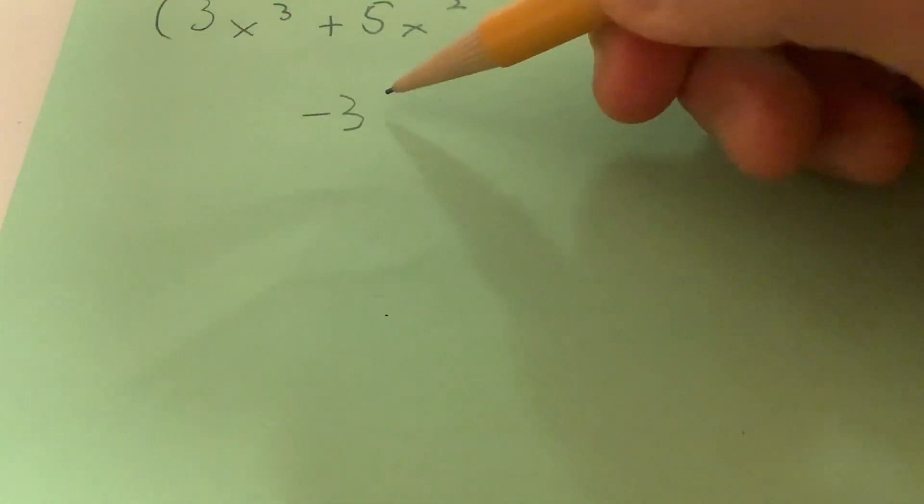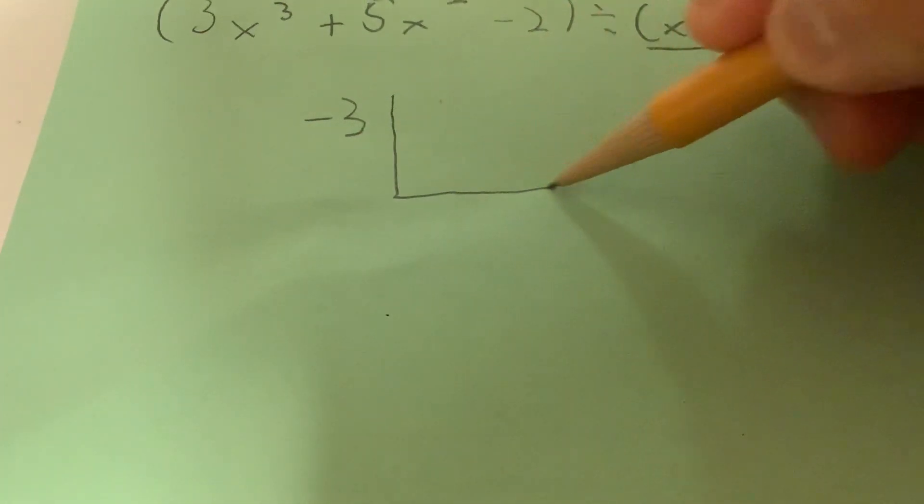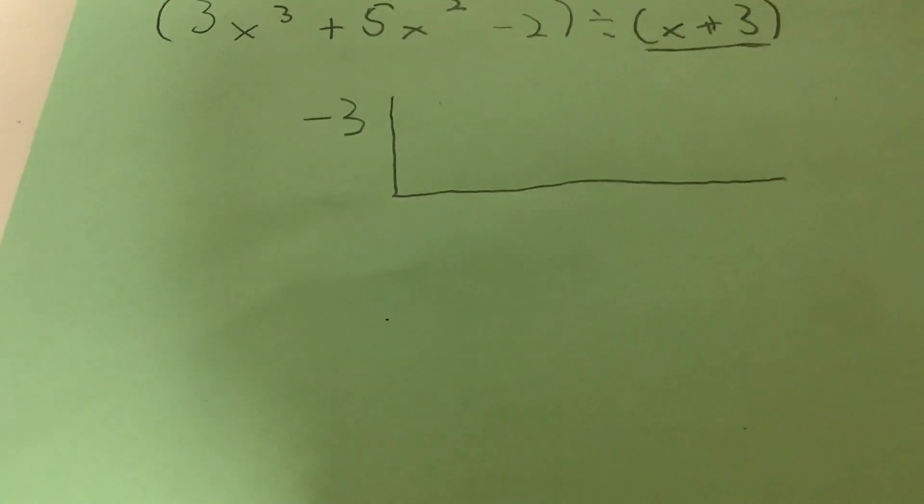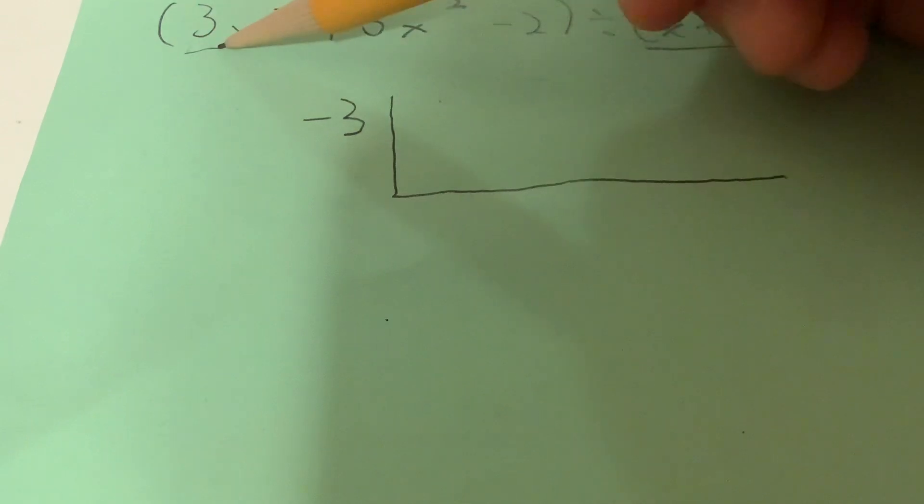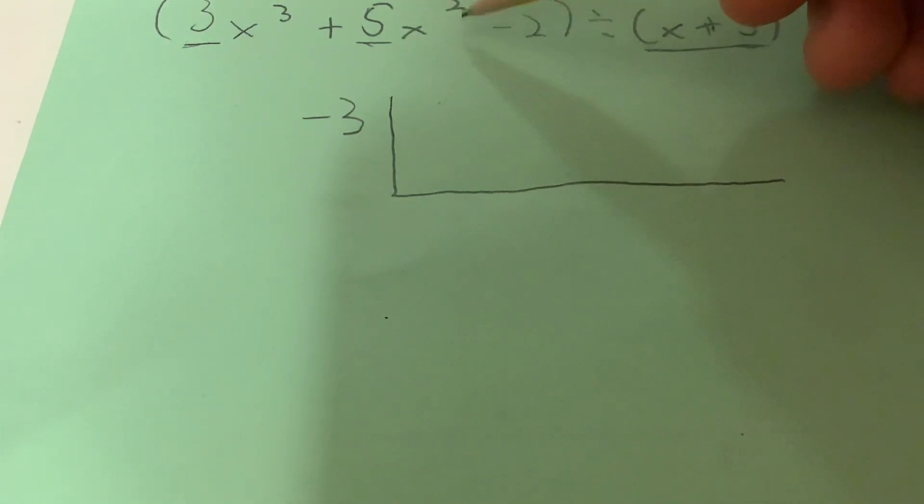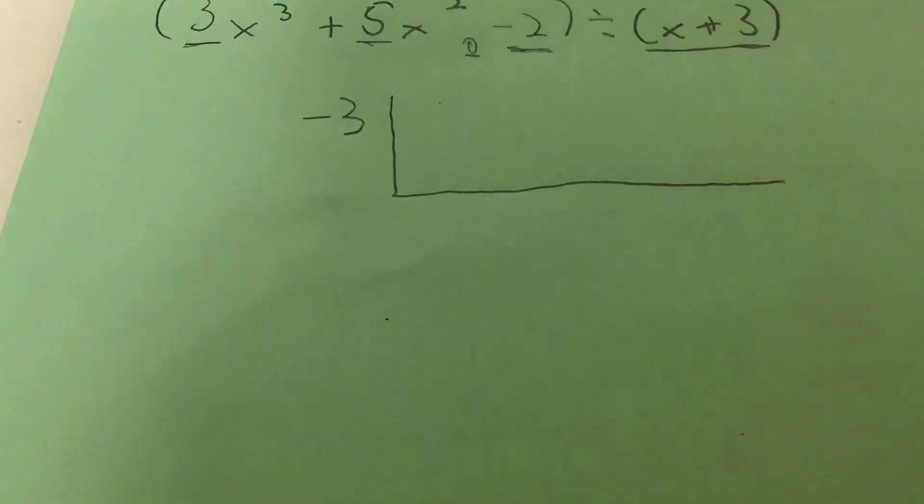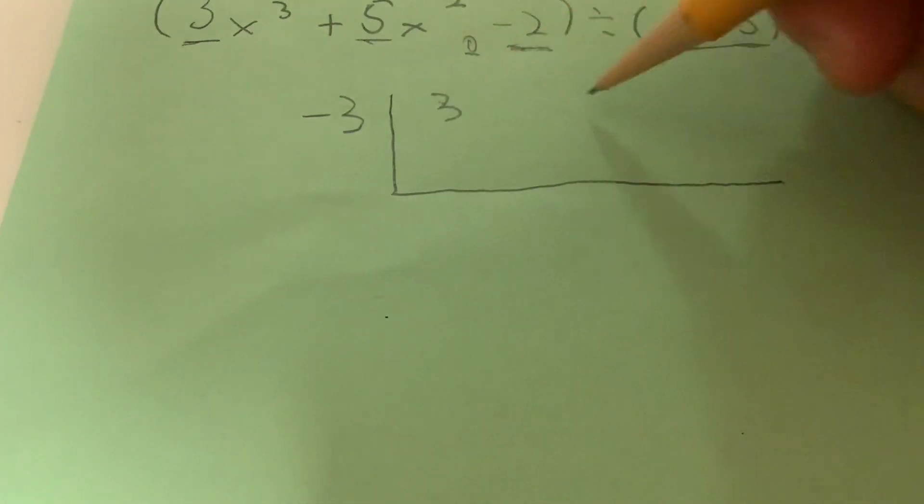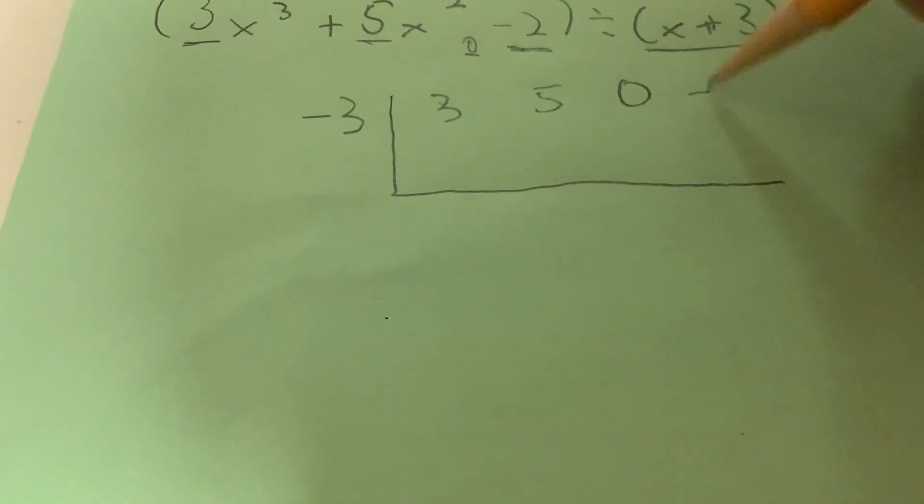Then we're going to make this upside down division thing. And then we write the coefficients of each of these terms, so 3, 5, and then here there's no x, so we want to find a linear term, so it's 0. And negative 2, we just take the constant. So it's going to be 3, 5, 0, and negative 2.